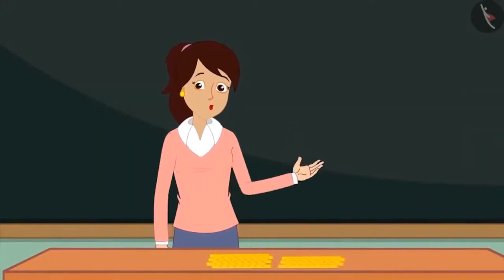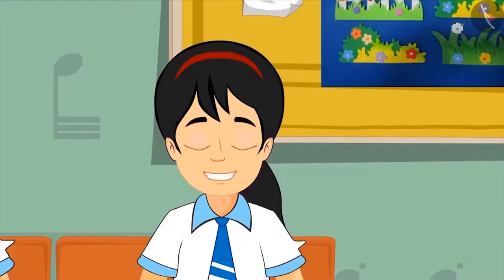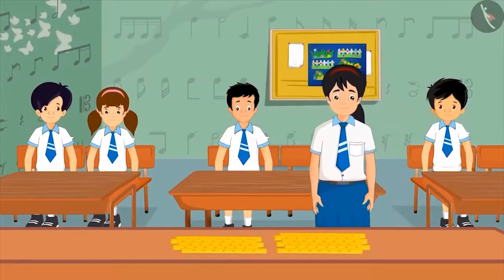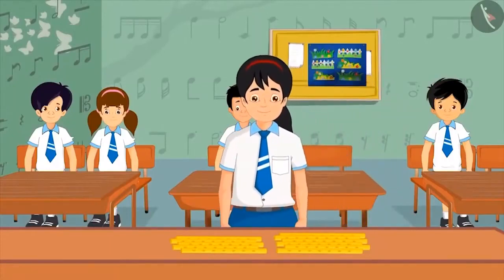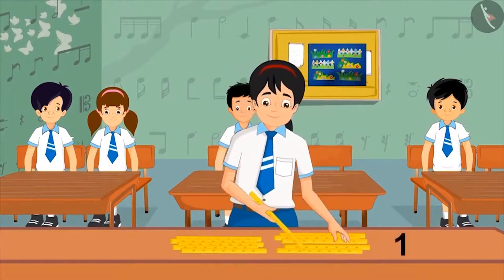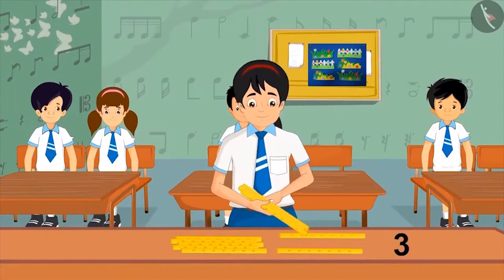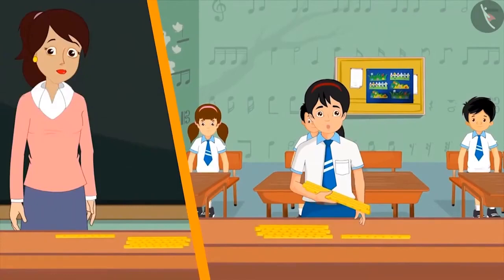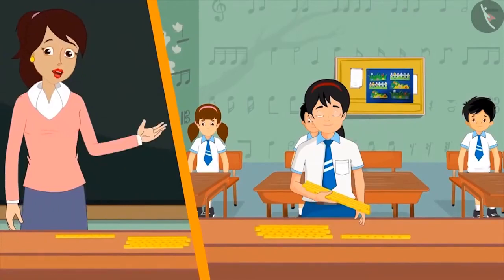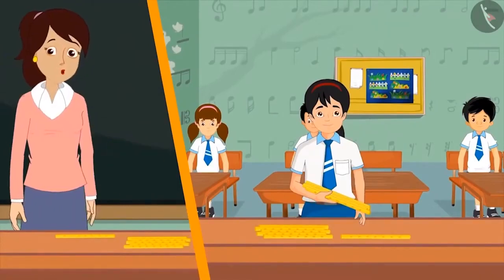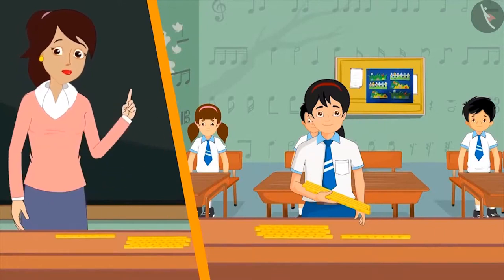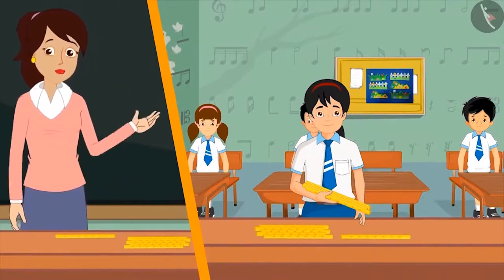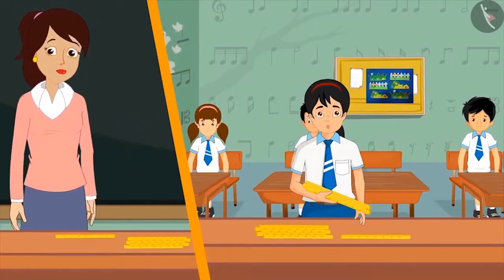The teacher asks: Pinkie, can you bring 5 flutes from the table? Pinkie replies: Yes ma'am, I will bring them. Then Pinkie goes to the table and picks up 5 flutes one by one — 1, 2, 3, 4, 5. Here you go ma'am, I have 5 flutes.